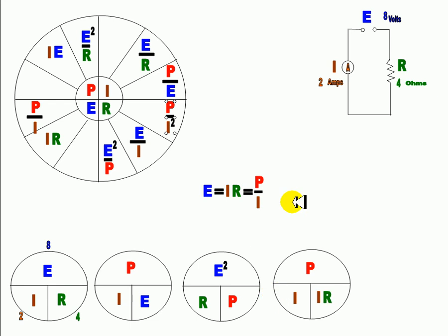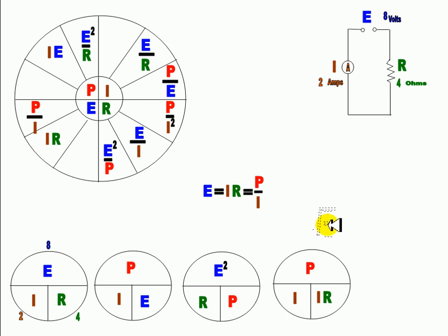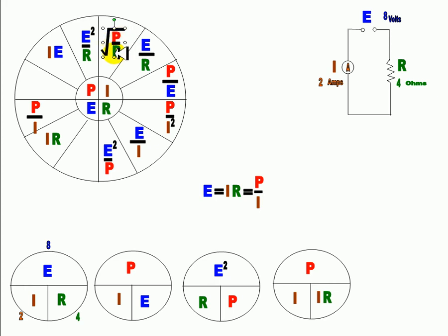Now do it the other way around. P divided by R — let's find out what I is. You notice this one here? You combine them, but to get I alone by itself, you have to use square root. So remember that — you have to use square root. P divided by R equals I squared, so the square root of P divided by R gives you I. That's why this formula has a square root in it.